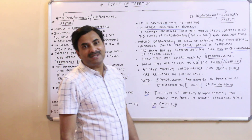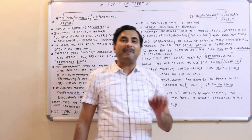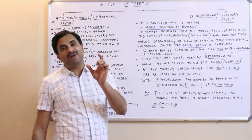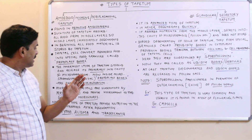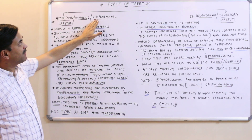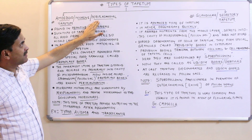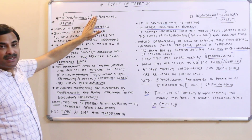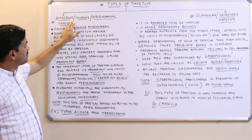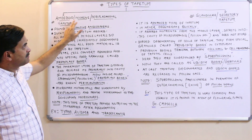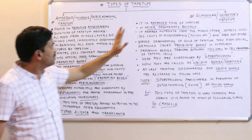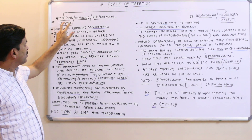In the last video we discussed about the tapetum and its functions. Now the important thing is how many types of tapetum are there. Tapetum is basically of two types: one is known as the amoeboid tapetum and another is known as the glandular tapetum.